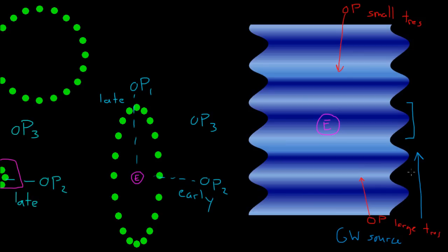Sources like orbiting supermassive black holes in the centers of large galaxies are one example of a system which will produce these low-frequency gravitational waves in the nanohertz frequency range. And being sensitive to these nanohertz frequencies is actually why we use the name NANOGrav — we're trying to detect nanohertz frequency gravitational waves.